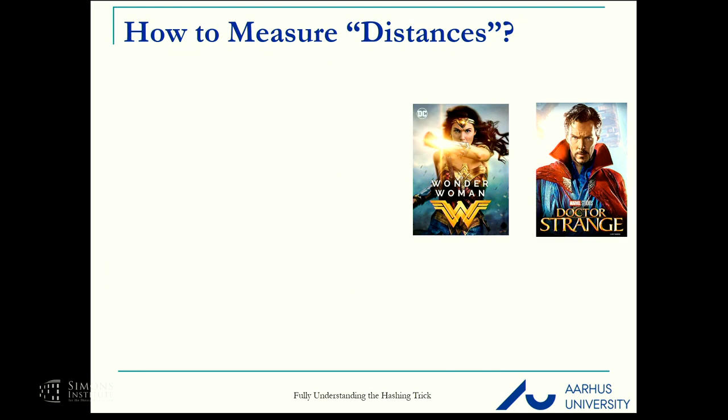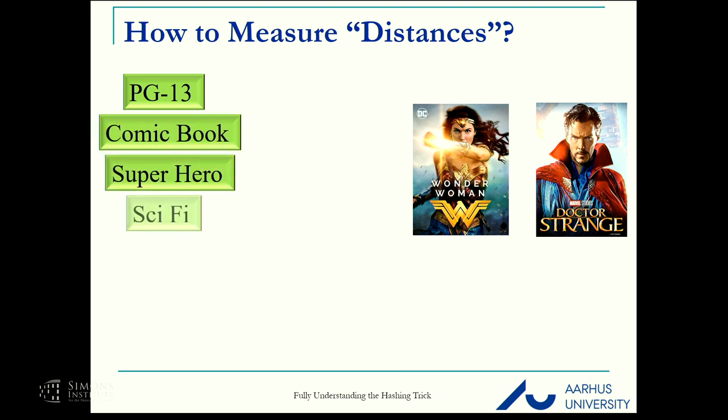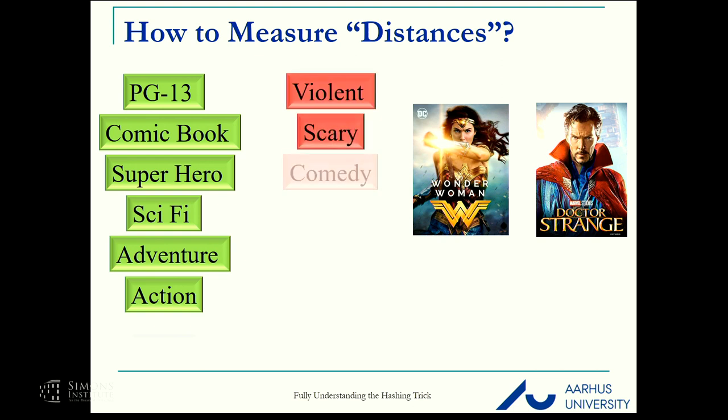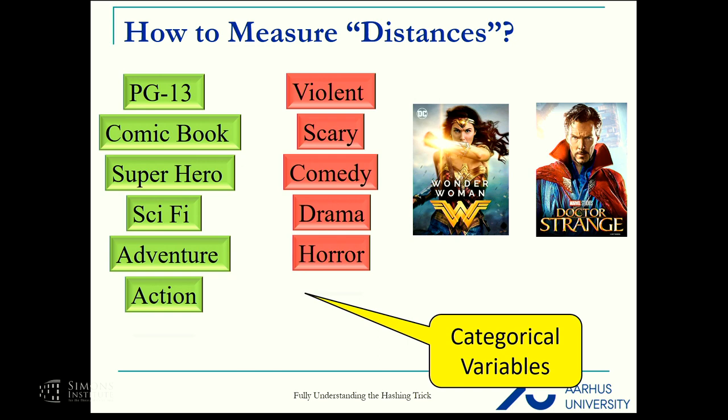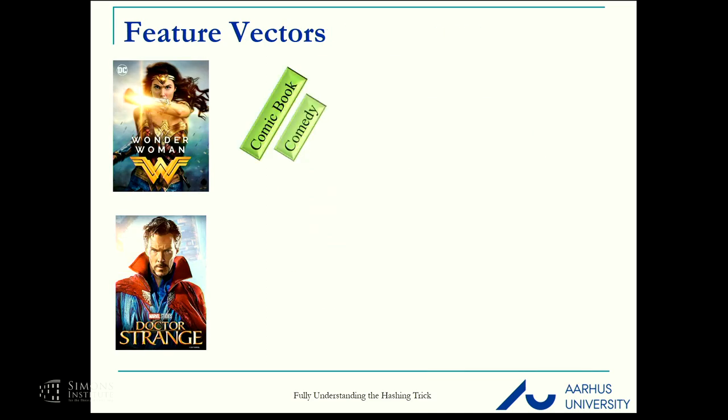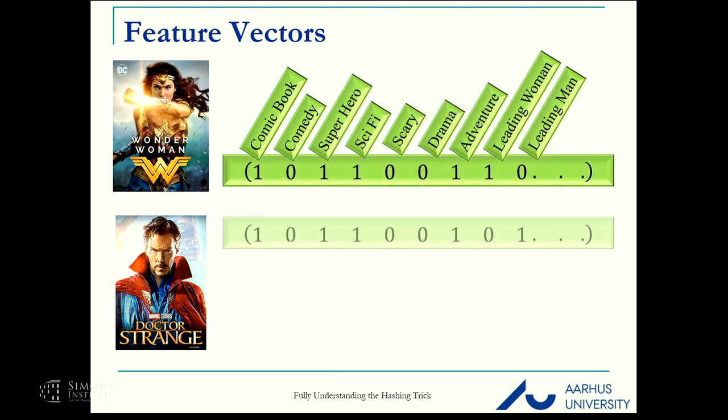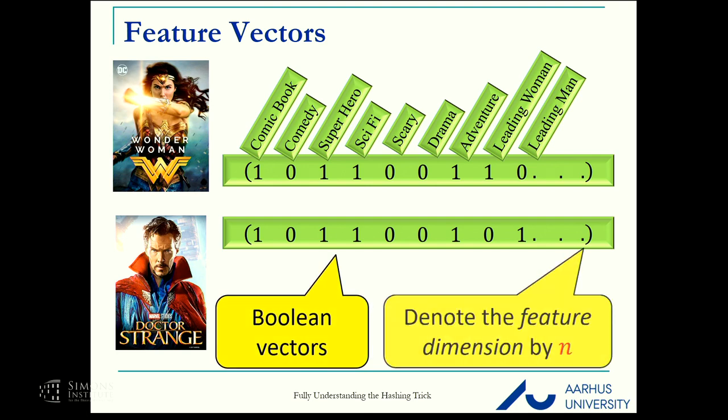As humans, it's very easy. If we were to recommend a movie to a friend, we consider what the movie has, what it doesn't have, and all kinds of attributes. These are called categorical variables. A computer cannot handle these. So how do we transfer these to something an algorithm can handle?